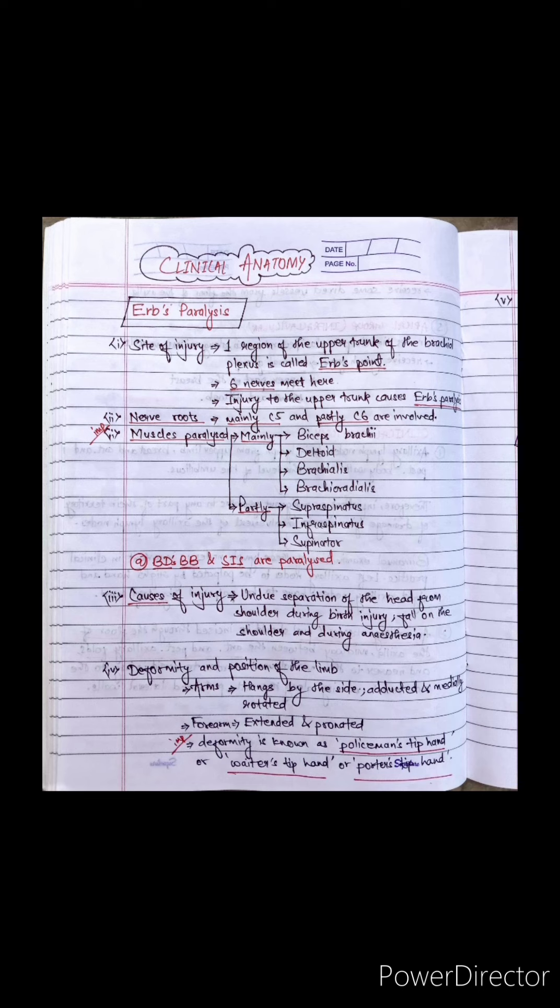Causes of injury include separation of the head from shoulder during birth injury, fall on the shoulder, and during anesthesia. Deformity and position of the limb: arm hangs by the side, adducted and medially rotated, forearm extended and pronated.